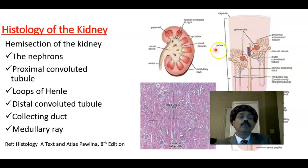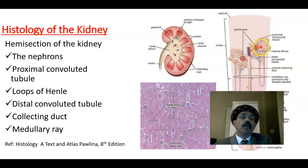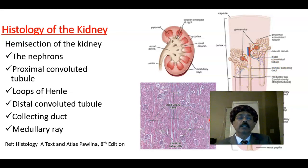In the cortical region, we get structures like the glomerulus, the proximal convoluted tubule, the descending limb and ascending limb of the loop of Henle, and the distal convoluted tubule, which ultimately leads to the collecting duct.